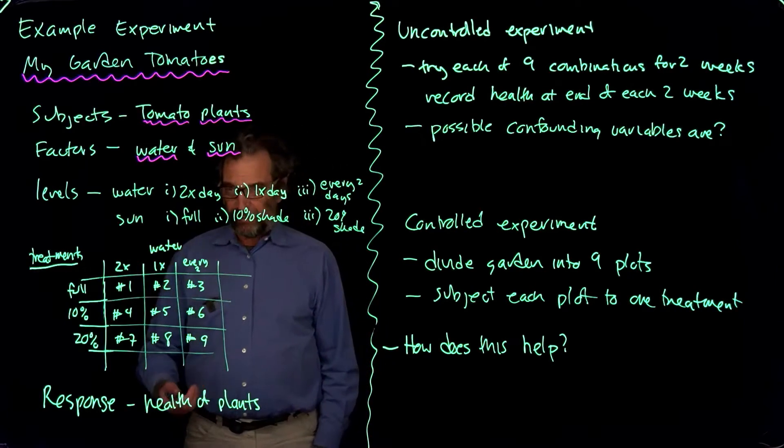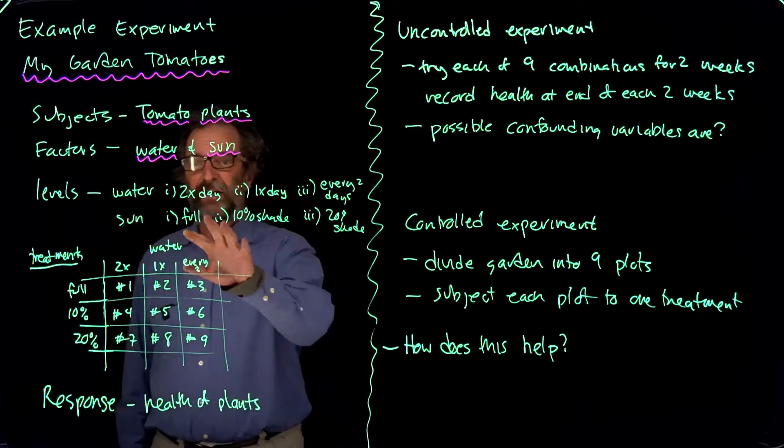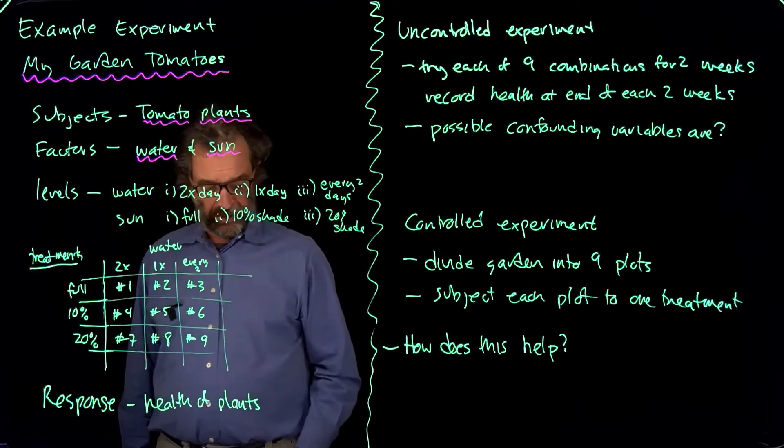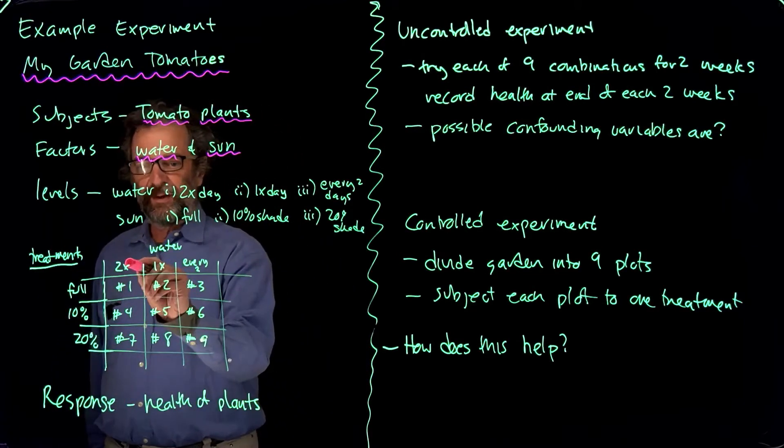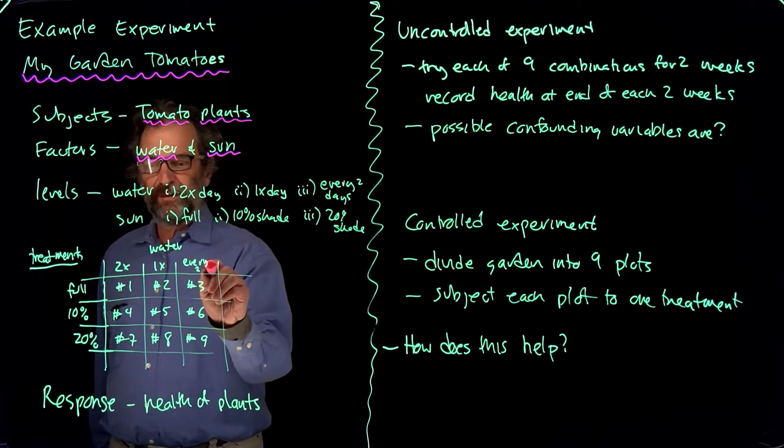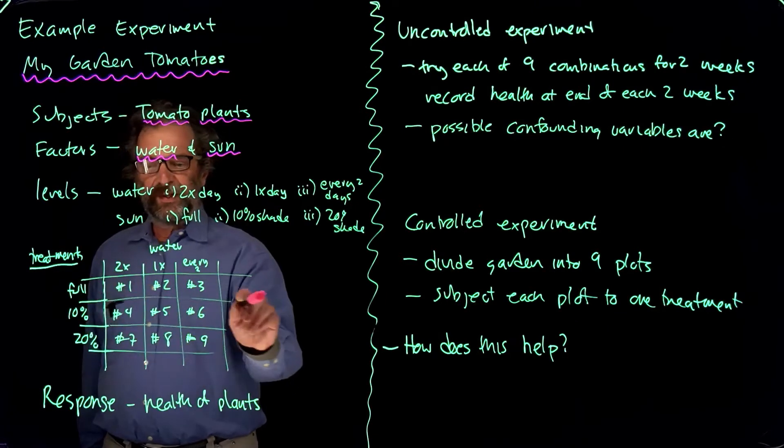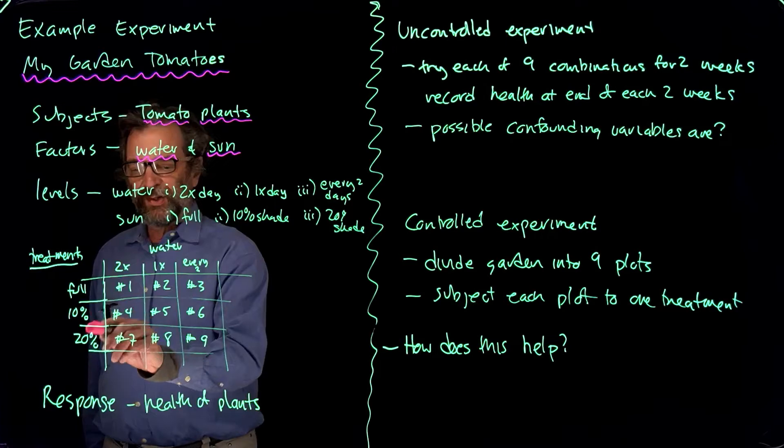And so the treatments I want to investigate involve all the combinations of watering and sun. One way to see them is to make a table like this, where the water schemes are across the top here: two times, one times, every two days. And then the sun schemes are horizontal: full sun, 10% shade, 20% shade.